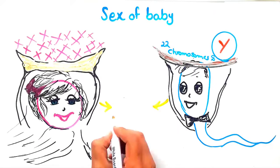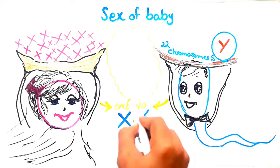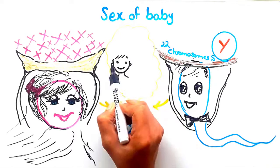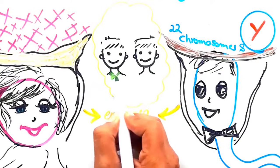But if the sperm carries a Y chromosome, the formed 23rd pair will be XY, and the embryo will develop into a male offspring.